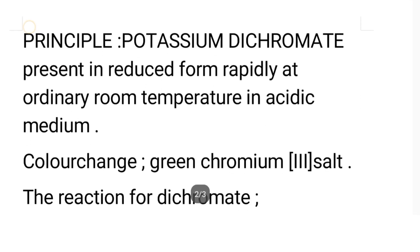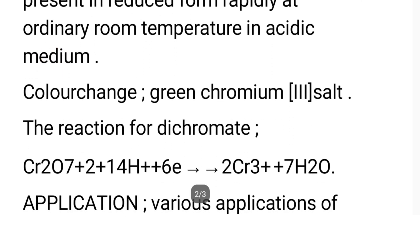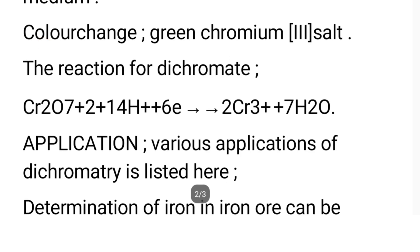Potassium dichromate is used in an acidic medium. In this acidic medium, a color change occurs. The color changes to green due to the formation of chromium(III) ions. Remember the endpoint: the color change observed in the conical flask indicates the end of the reaction. You should also note the purple color at the endpoint.